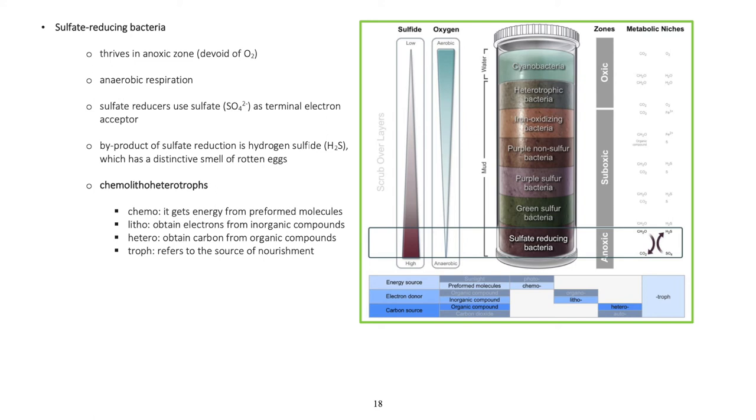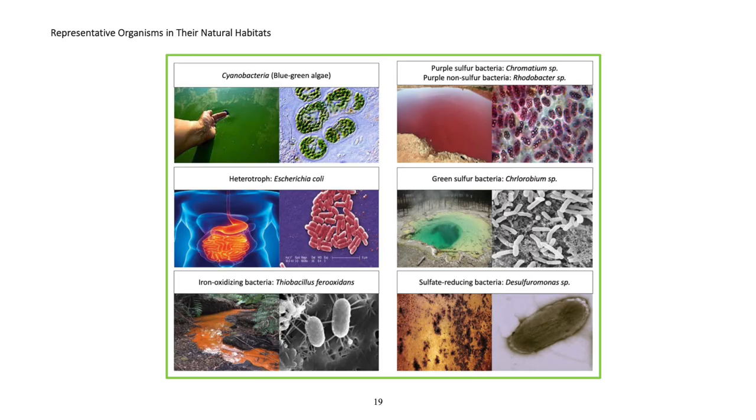Sulfate reducing bacteria thrive in anoxic zone devoid of oxygen. Anaerobic respiration. Sulfate reducers use sulfate as terminal electron acceptor. Byproduct of sulfate reduction is hydrogen sulfide, which has a distinctive smell of rotten eggs. Chemolithoheterotrophs - chemo: gets energy from preformed molecules, litho: obtain electrons from inorganic compounds, hetero: obtain carbon from organic compounds, troph: refers to the source of nourishment.